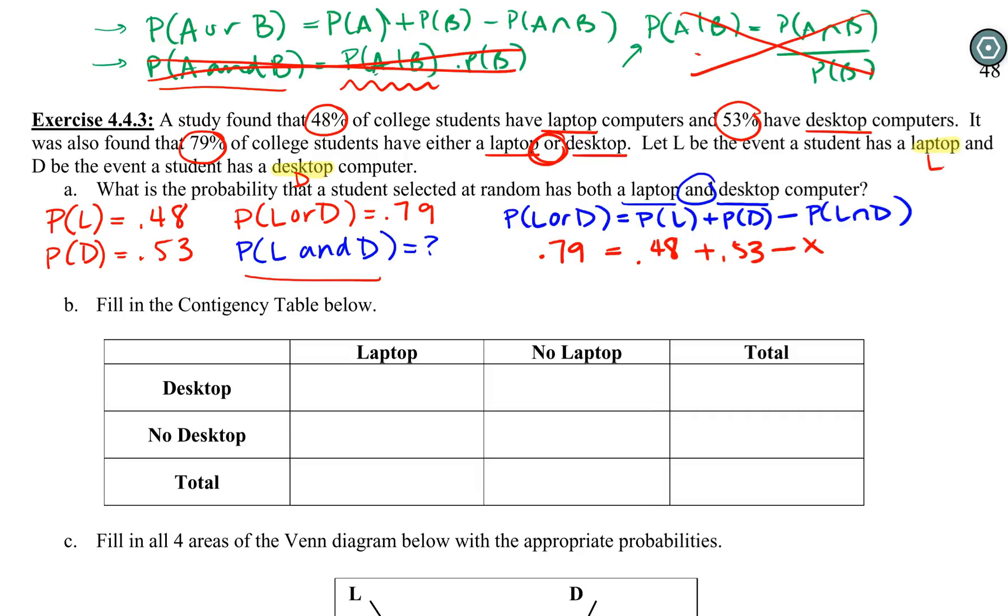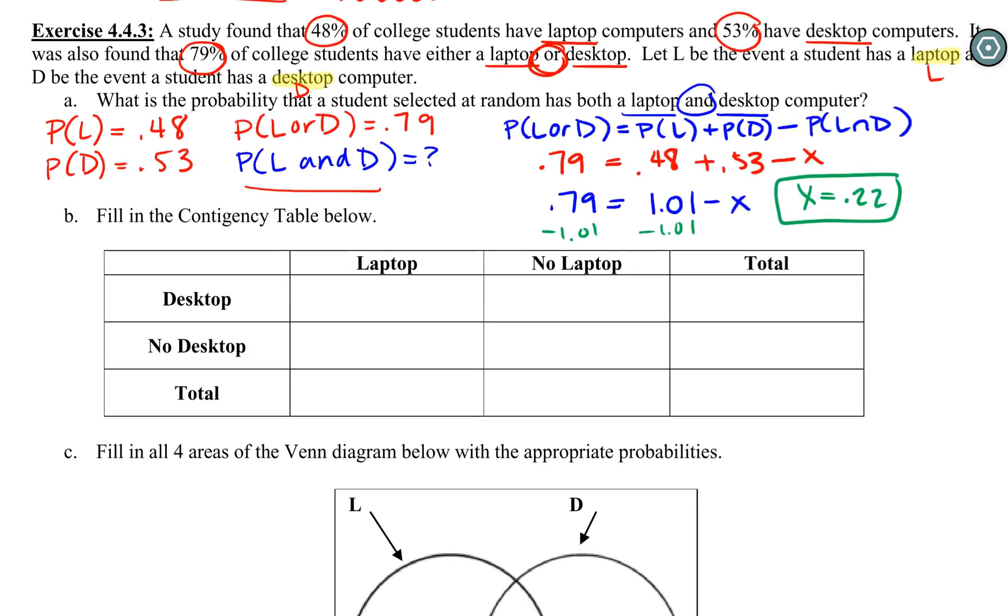Now we're back to that hardest algebra question we see in statistics: we need to solve for X. It looks very much like our residual question. We have 0.79 = 1.01 - X, so we subtract the 1.01, and X equals 0.22. Now we have enough to fill in our contingency table: we have laptop by itself, desktop by itself, laptop and desktop intersection, and we know our total is one.